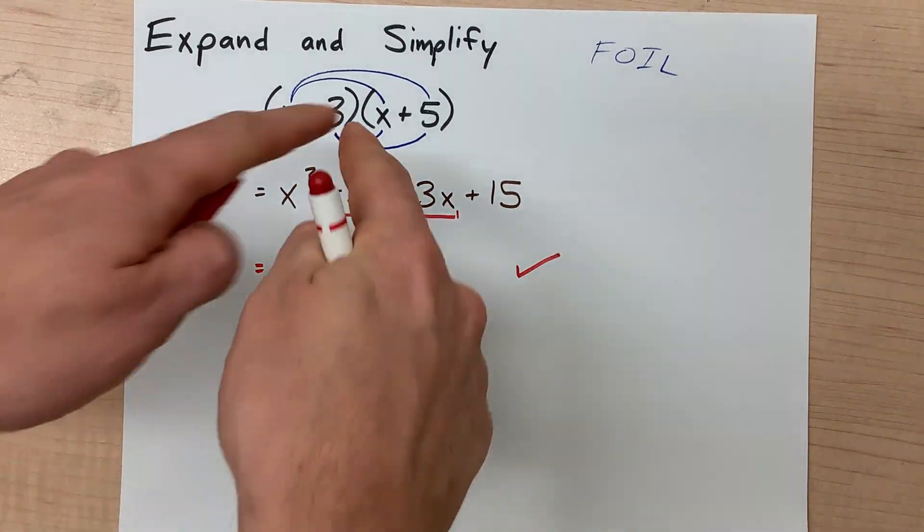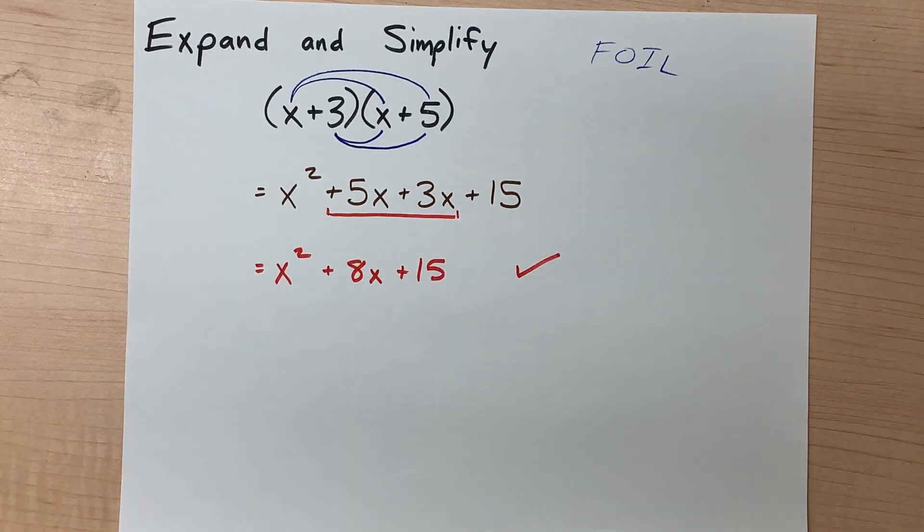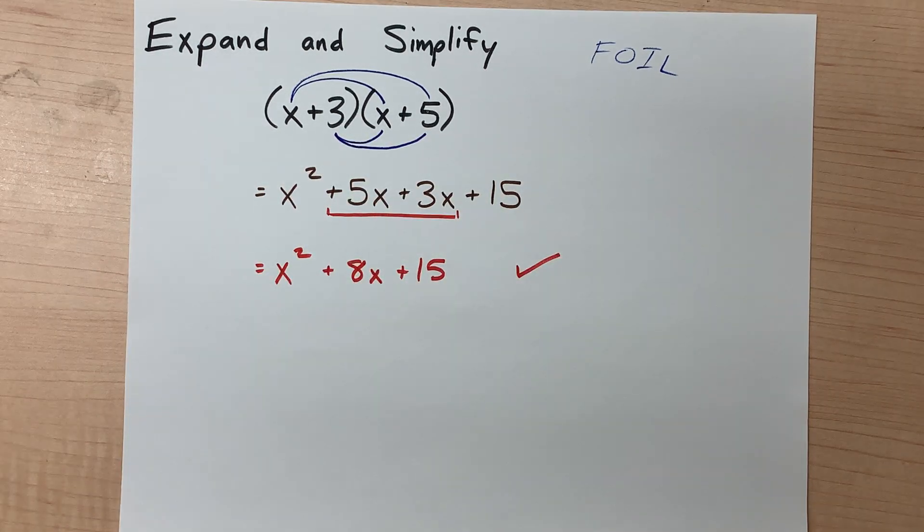This is your final answer. You have expanded by doing a multiplication and simplified by collecting like terms. Congratulations! You did it. Now you're ready for another. Best of luck.